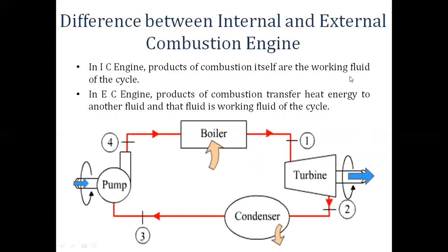First, let's understand what is working fluid: it is the fluid that does work in the cycle. What was the working fluid in the open-cycle gas turbine? The products of combustion. What was the working fluid in the closed-cycle gas turbine? Air — because air circulates in that cycle, not the products of combustion. So in IC engines, the products of combustion are themselves the working fluid of the cycle. But in external combustion engines, the products of combustion transfer heat energy to another fluid, and that fluid is the working fluid of the cycle. This is the main difference, and it explains why the steam turbine cycle is an external combustion engine.